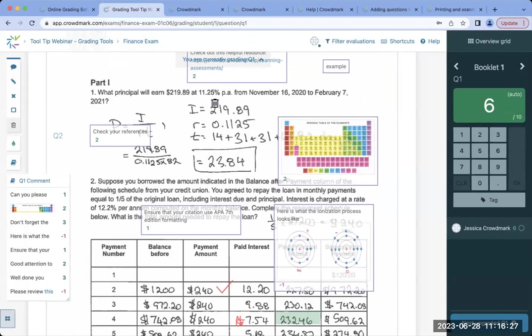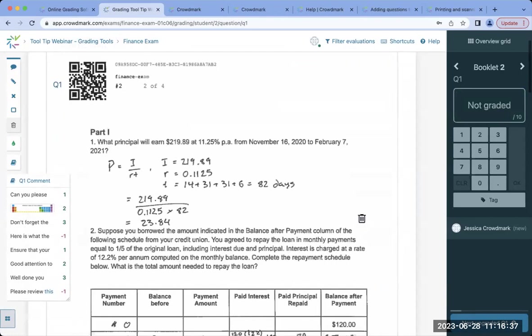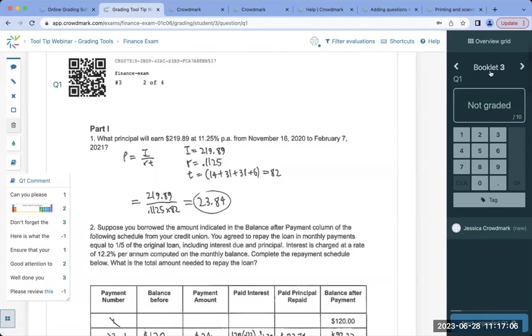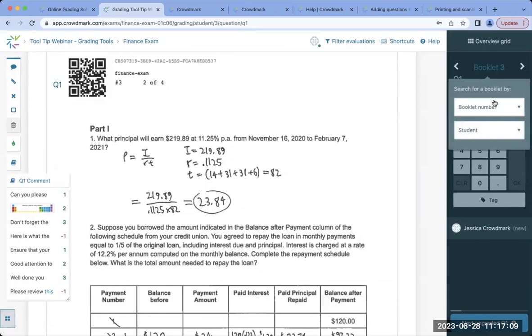Once we are finished grading our assessment question, we can click into the next question in the bottom right here. Crowdmark actually ensures that markers do not double up on grading by placing you on a different page or booklet than your team members in the case that multiple people are grading at the exact same time. You can ultimately move through questions, booklets or search for a particular student or booklet. To do that, you can use these arrows in the top right here. If you click into booklet three, you can search for a booklet by the booklet number or by the student.